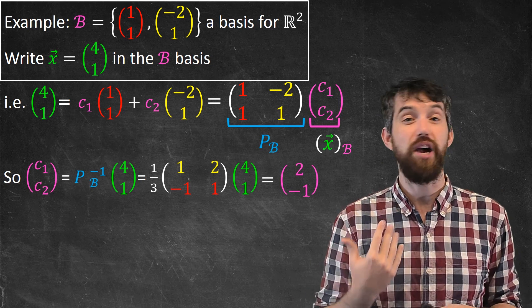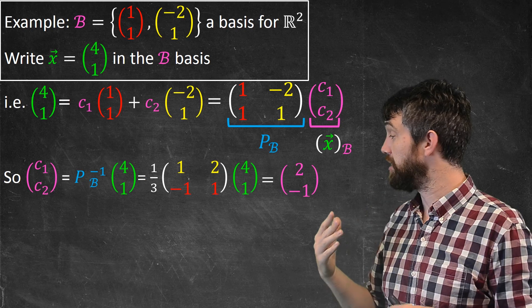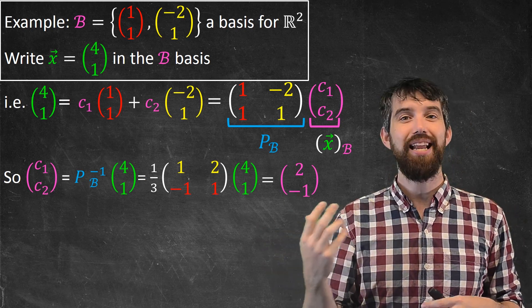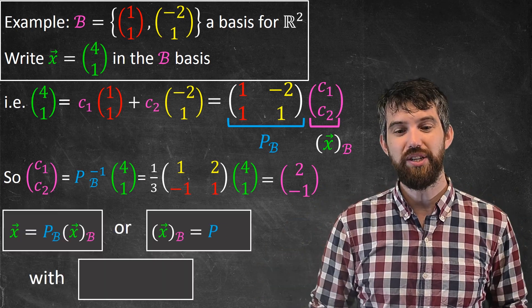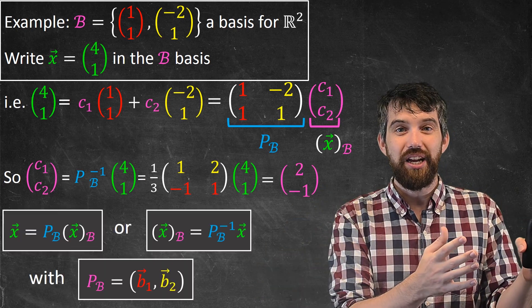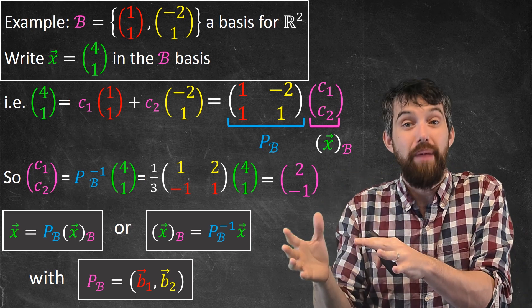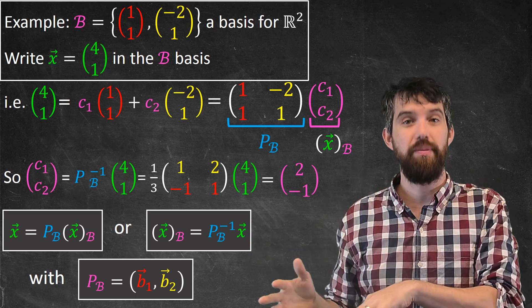Regardless, I've now figured it out. My c_1, c_2 is equal to (2, -1). And in doing so, I actually can come up with two general formulas. The first is going to be that x can always be written as this P_B matrix times x written in the B basis.